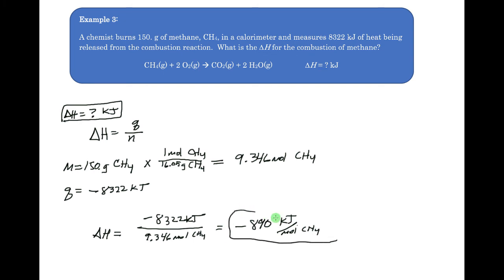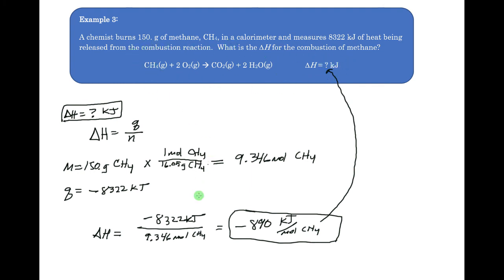I'm keeping the negative here because we're putting this into a balanced equation. We need to preserve the negative so that anyone who sees the equation knows it's exothermic — you won't always have the words at the top explaining it. We want to show the property of this chemical reaction. So there are three examples of how to calculate using thermochemical equations. Let me know if you have any questions. Thanks a lot.